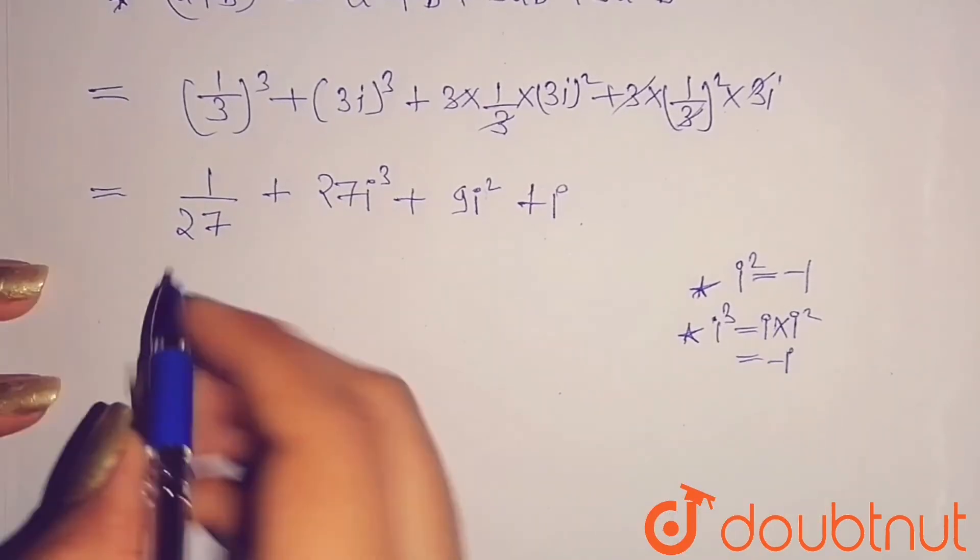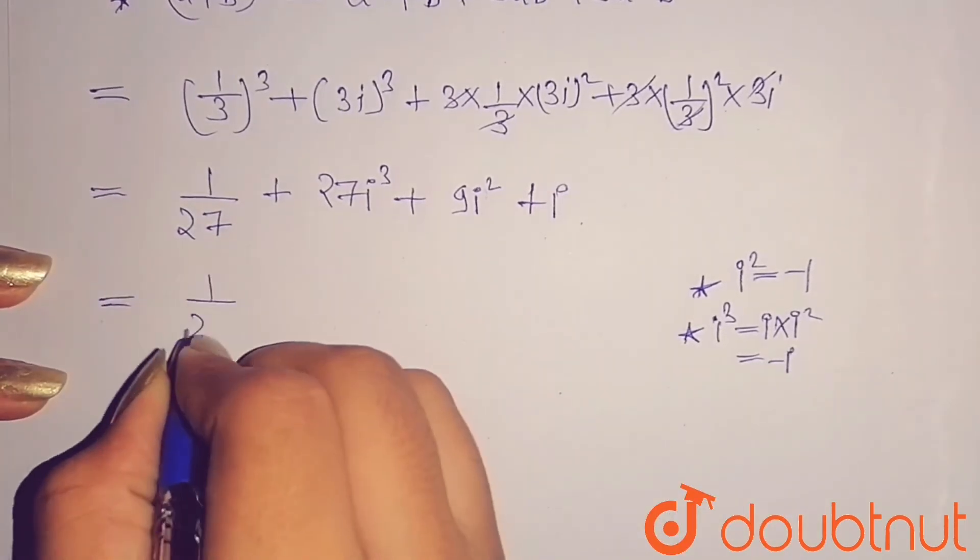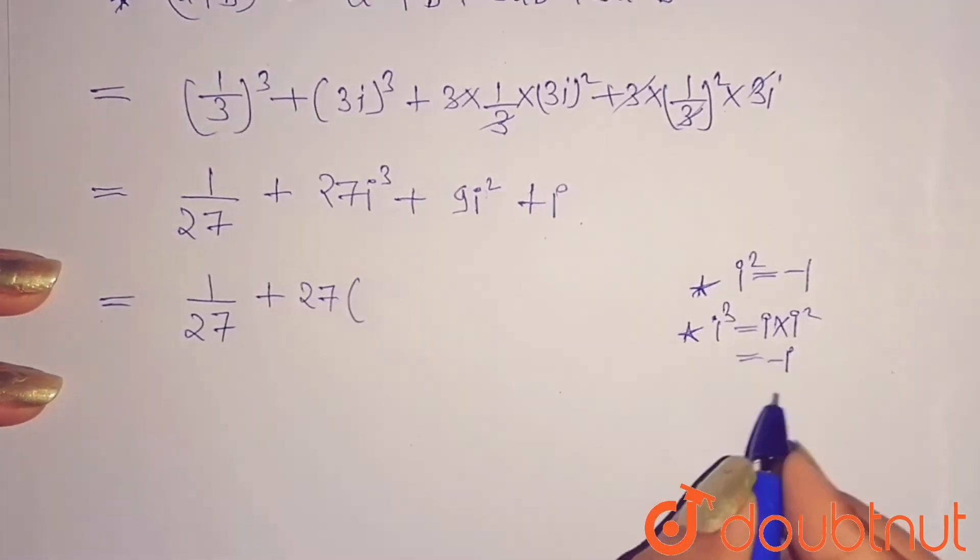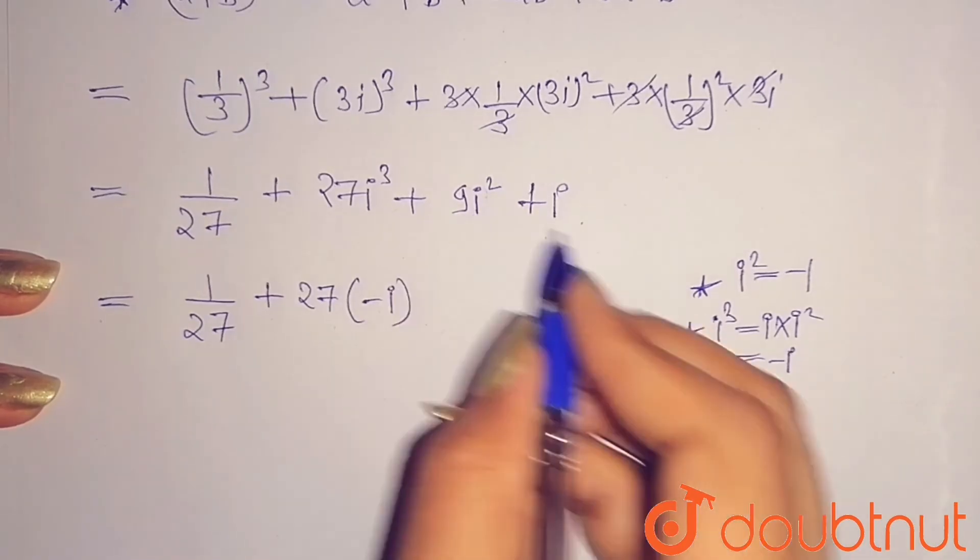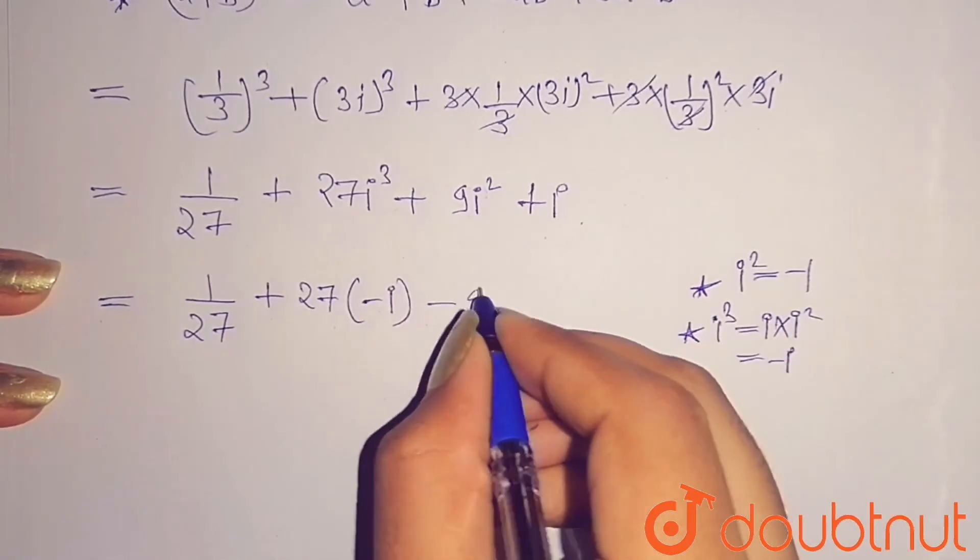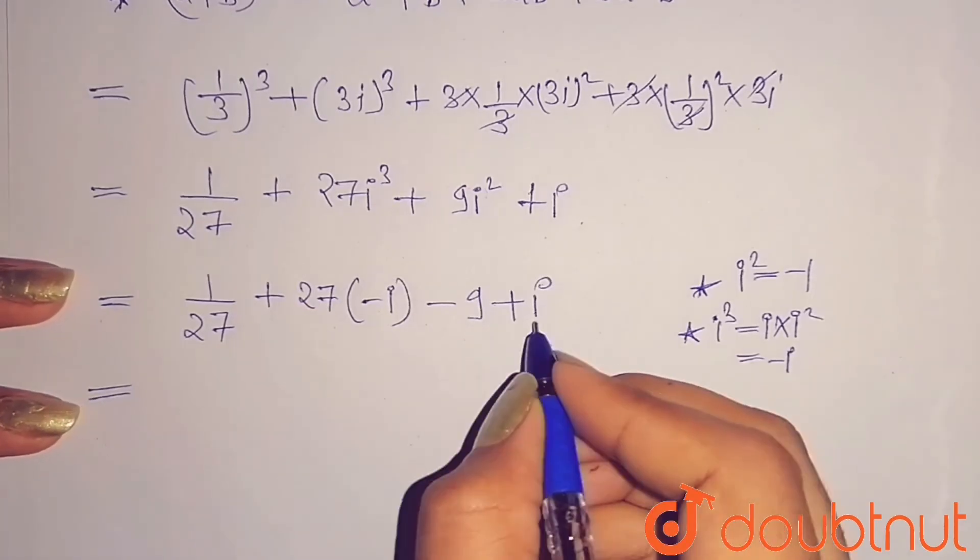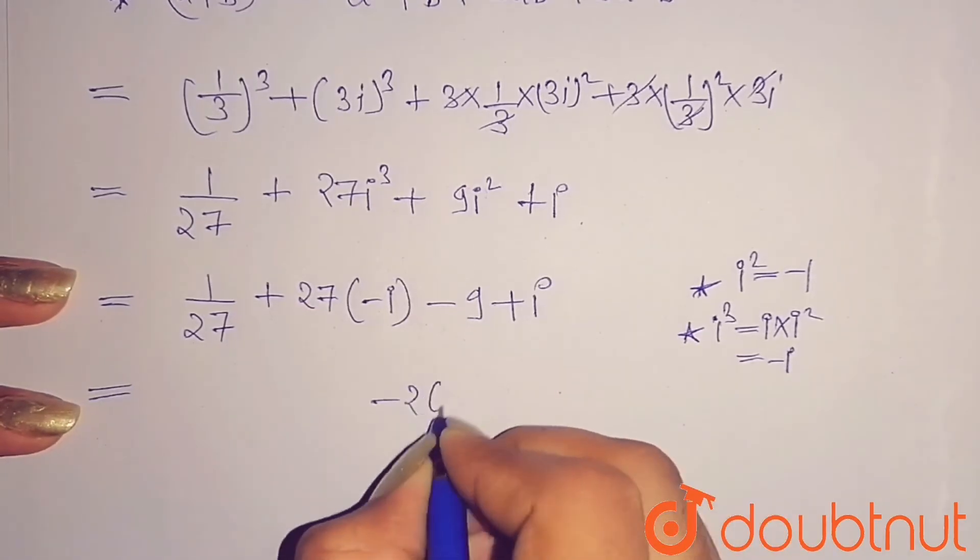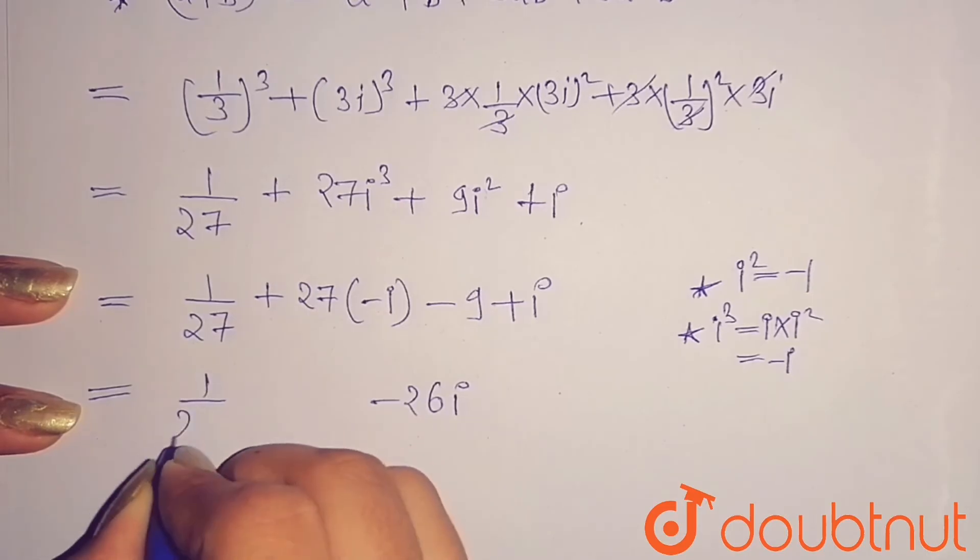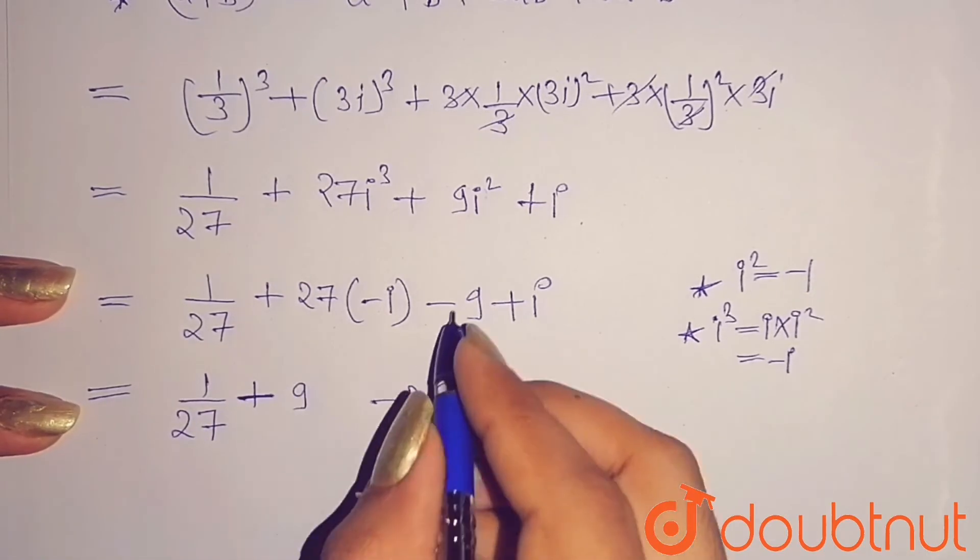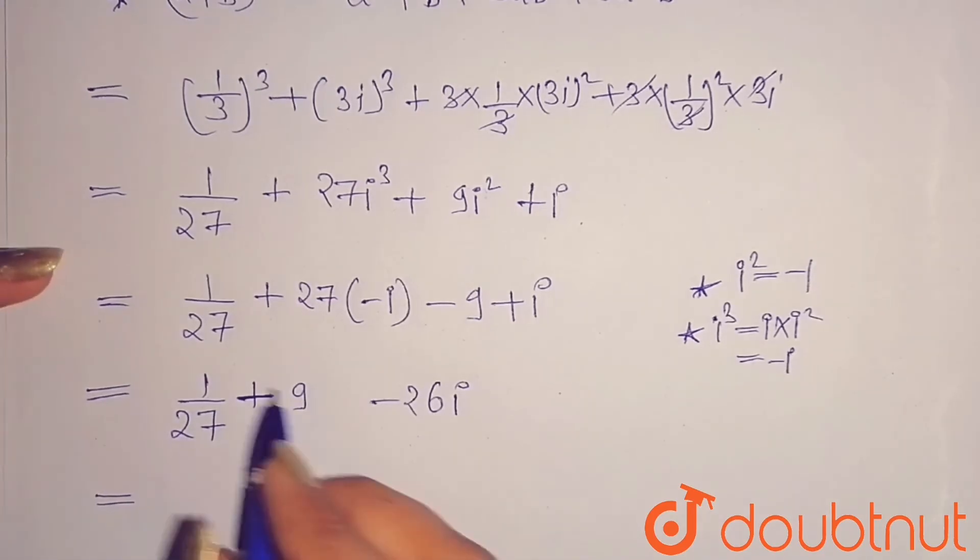So here 1/27 + 27, here you will put the value -i. i² value is -1, so -9 and +i. Now -27i + i will give you -26i.